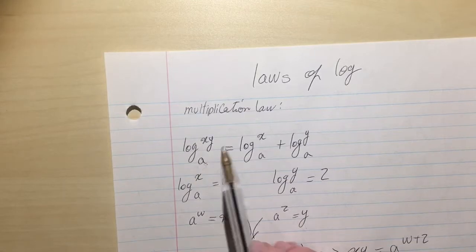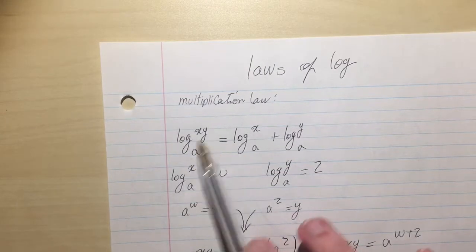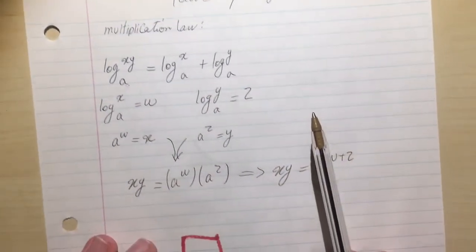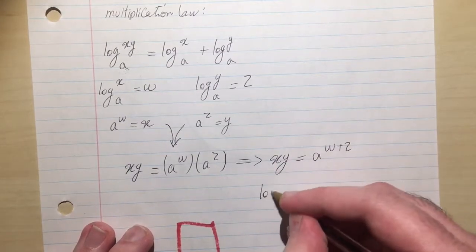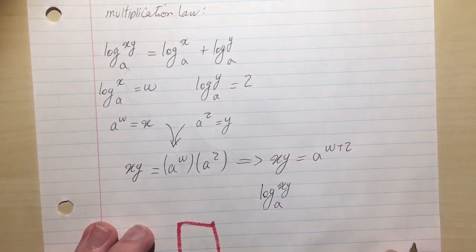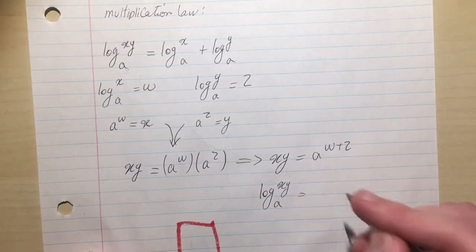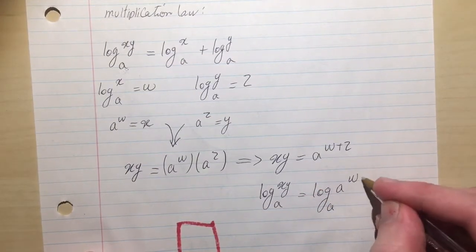So I'm going to take the log of both sides, and that log will have the base A because I'm interested in base A's. Don't write base B, don't write base anything else. Write the log which you're interested in, which is log something base A. So I take the log base A of these two. Just write x, y base A. That's a way of taking the log of something. Equals log base A of A to the w plus z.